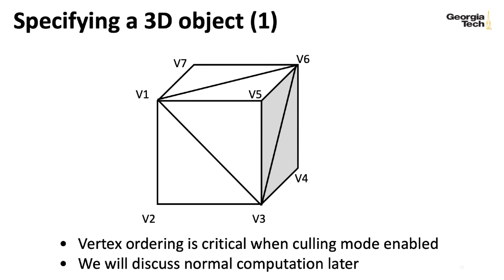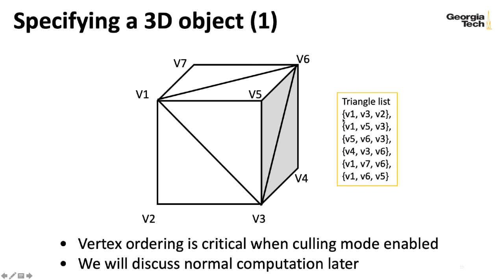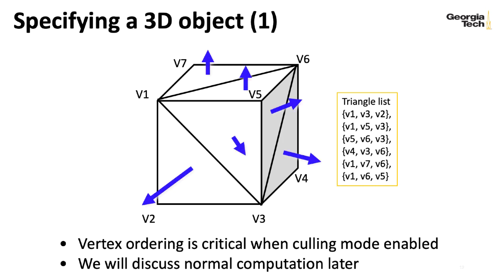Typically you have a list of vertices with XYZ coordinates for each, and then a list of triangles that are indices into that vertex list — which saves a lot on memory usage. The order you list the vertices in can be important. A common technique to avoid unnecessary computation is culling, where we only render triangles facing towards the viewer and don't bother rendering triangles facing away.